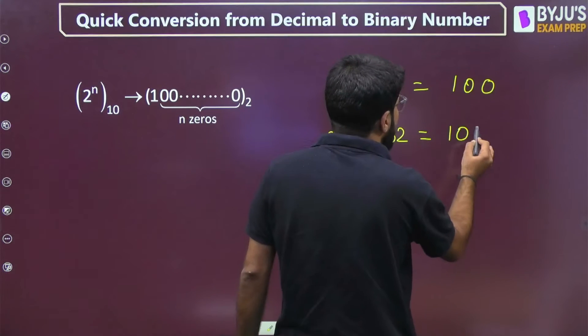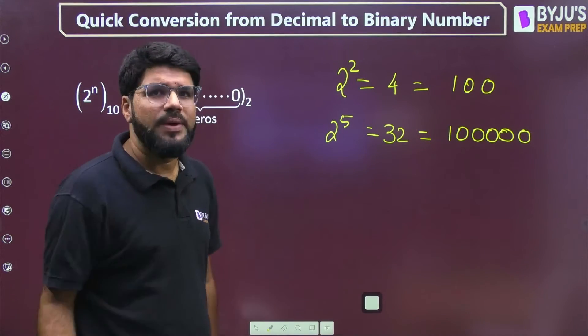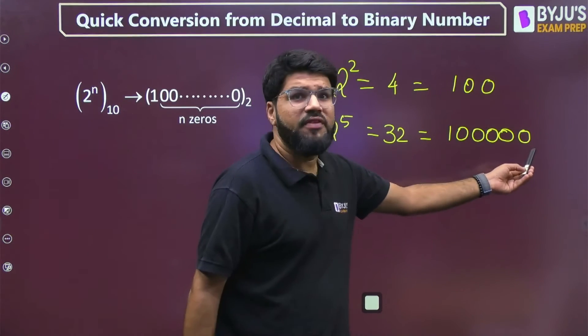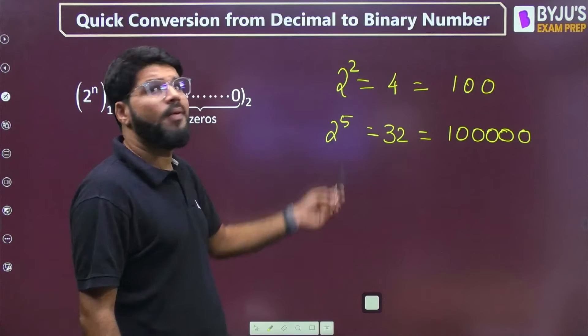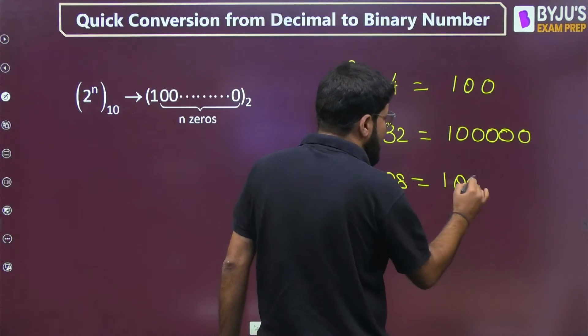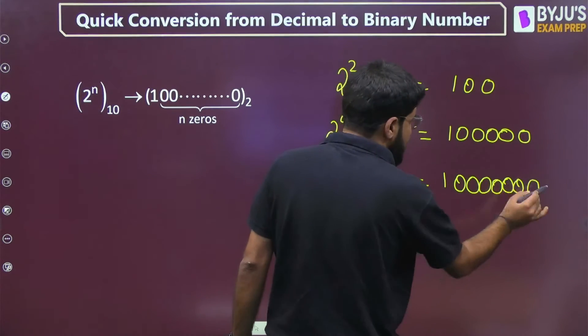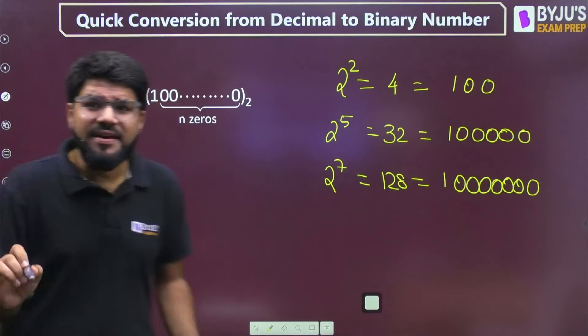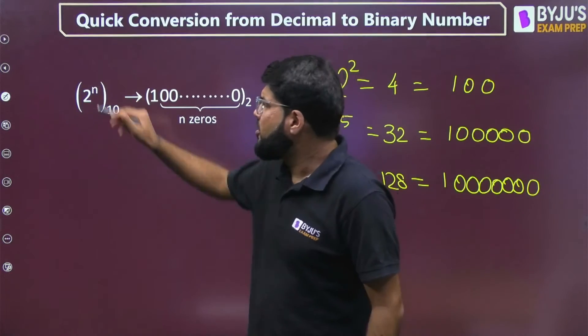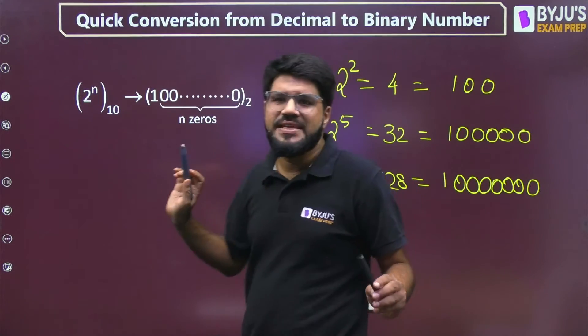2 power 7 is 128. If you convert to binary, you will get 1 followed by 7 zeros. In general, if there is any decimal number in the form of 2 power n, its binary conversion is very simple: 1 followed by n zeros. Now if I utilize this for 101.